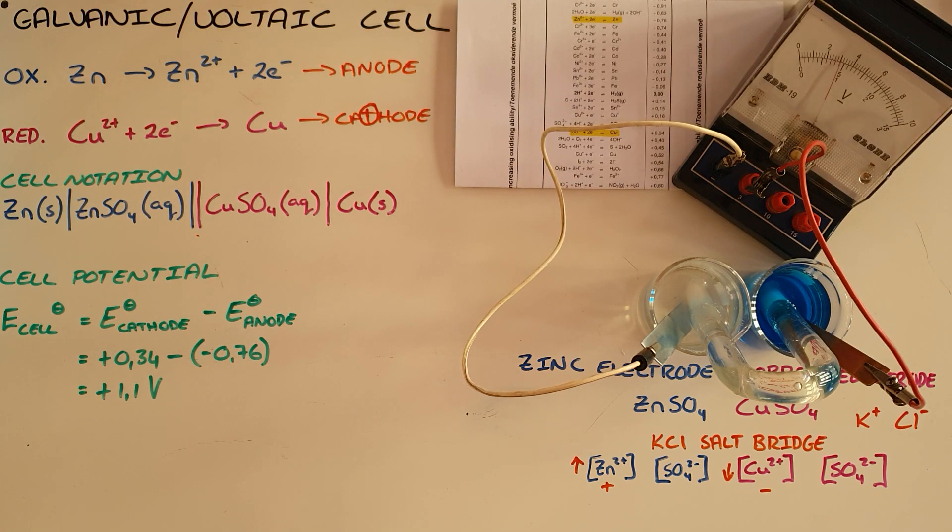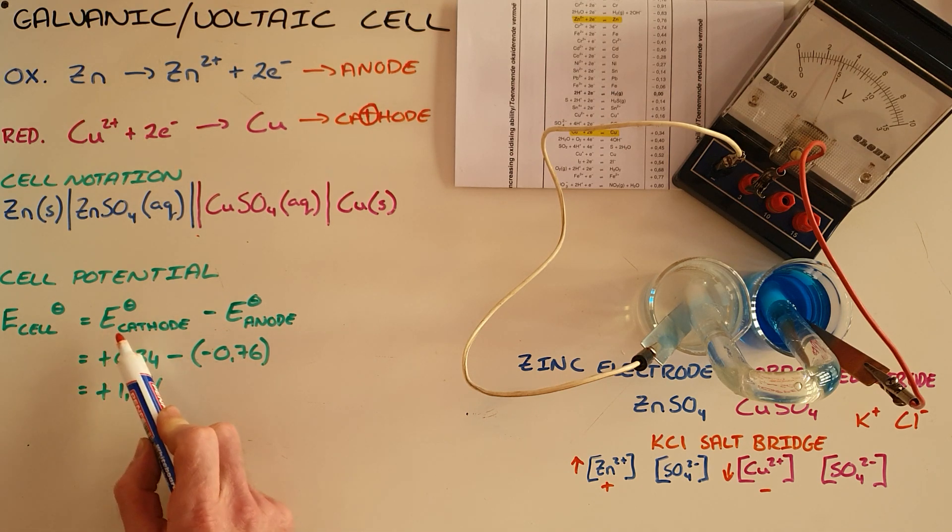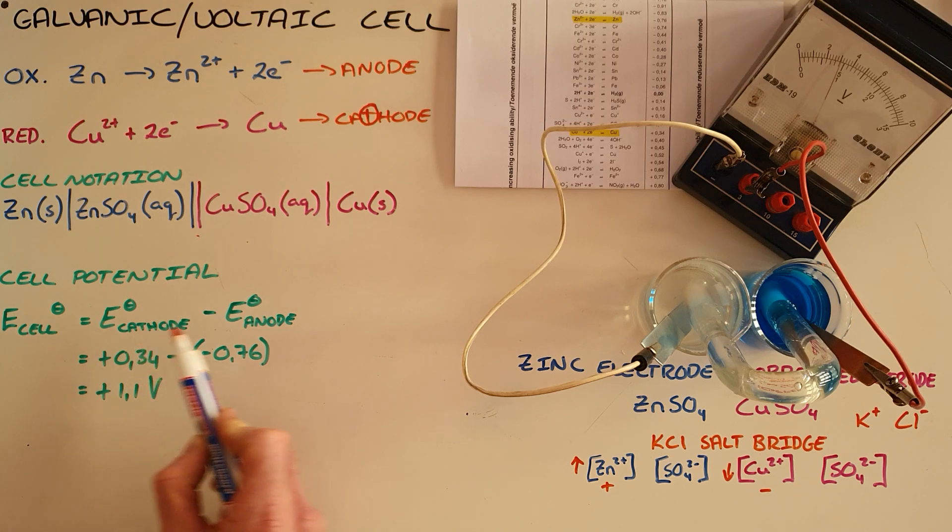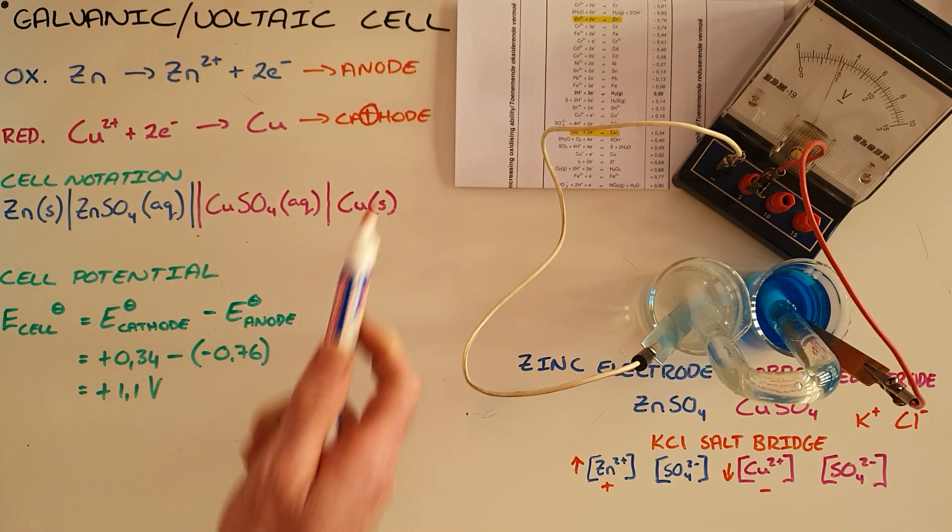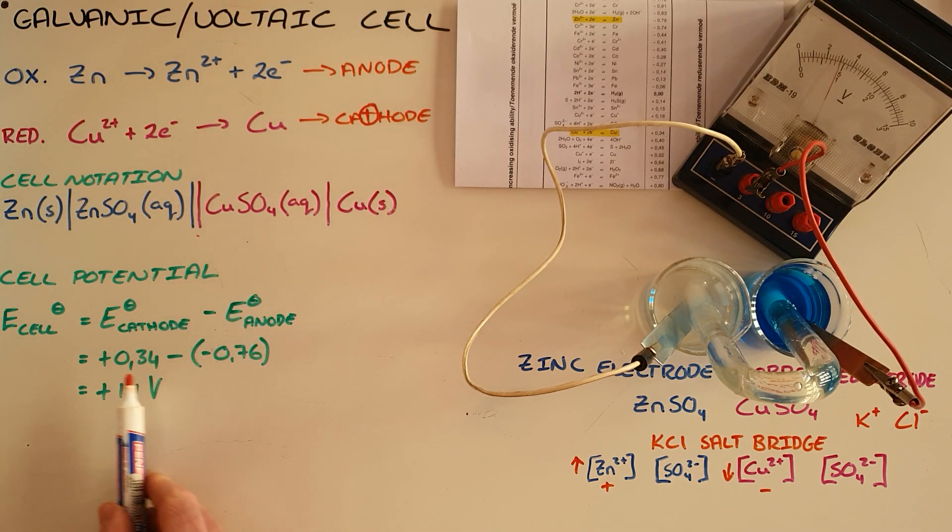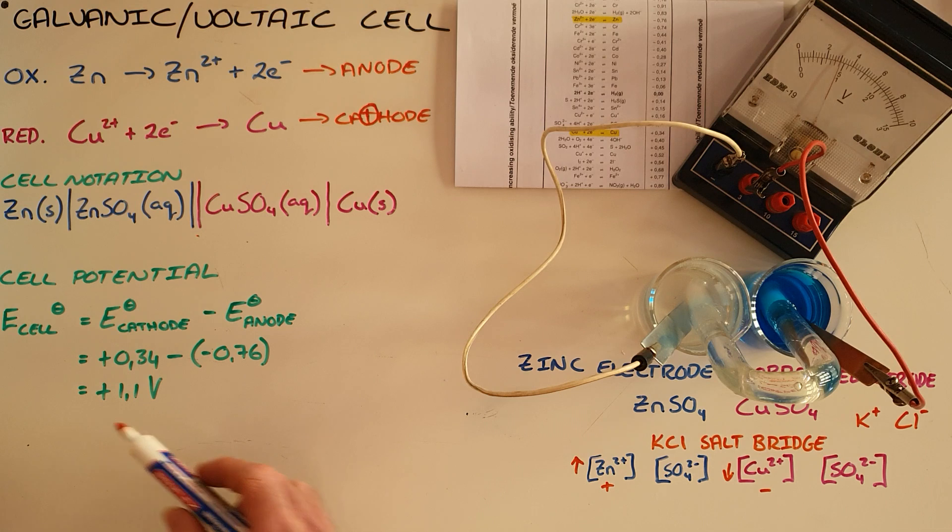We can calculate the standard cell potential using the following formula. The cell potential is equal to the half cell potential of the cathode minus that of the anode, which can be read off this table here. And we find that we get a positive cell potential, which indicates that this is a spontaneous reaction. That in ideal conditions, under standard conditions, this should yield 1.1 volts.